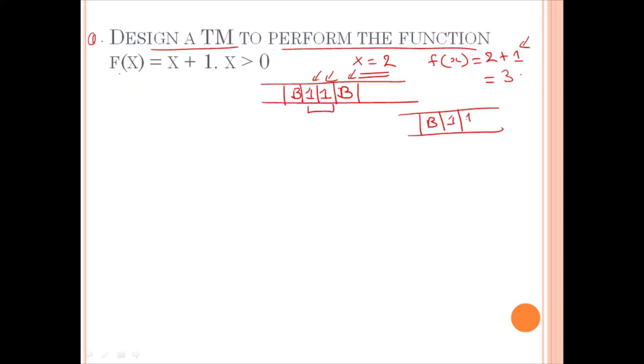The number of 1s will increase. So, in this way, we are going to design the Turing machine. What can happen? Suppose q1 is the initial state.